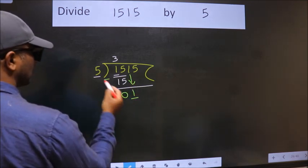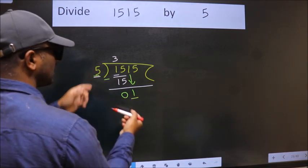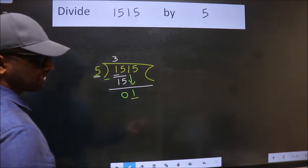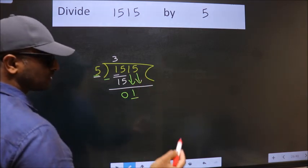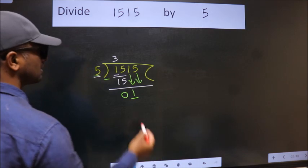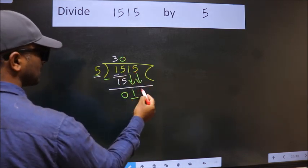Now, here we have 1, here 5. 1 is smaller than 5. So, we should bring down the second number. And the rule to bring down the second number is put 0 here. Then only we can bring this number down.